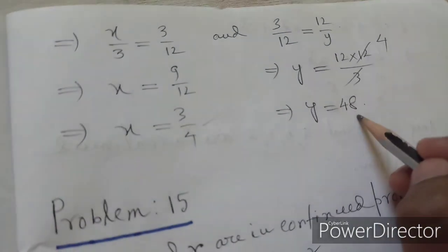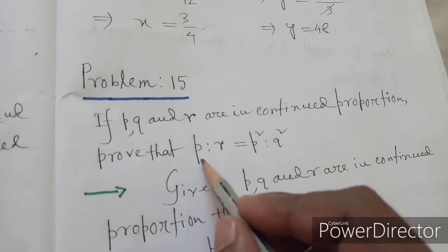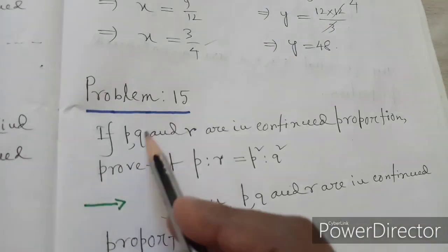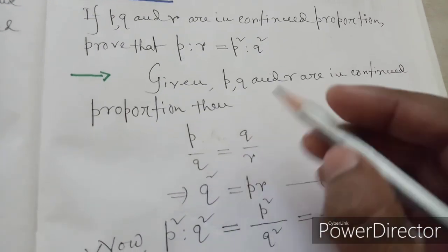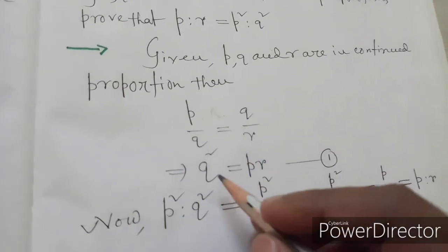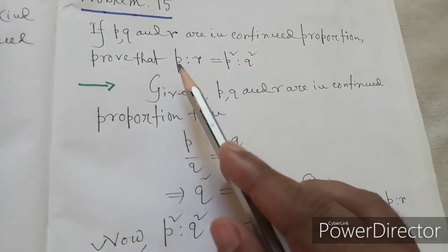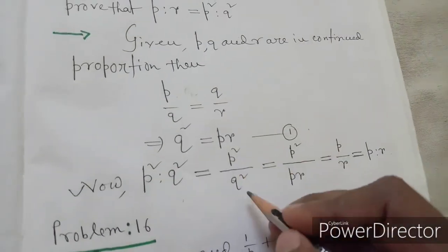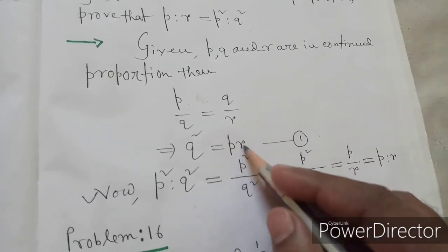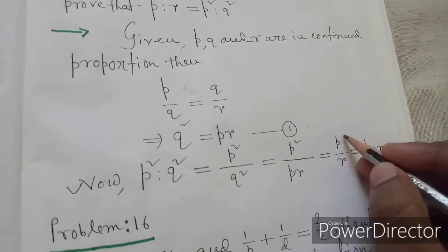Problem number 15: if p, q, r are in continued proportion, prove that p : r = p² : q². Given p, q, r are in continued proportion, so p/q = q/r. By cross-multiplication, q² = pr — call this equation (1). Now, starting with p²/q², we substitute q² = pr: p²/(pr) = p/r, which means p² : q² = p : r. Hence proved.